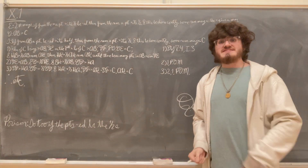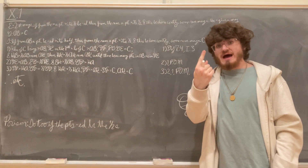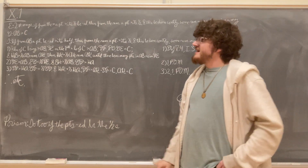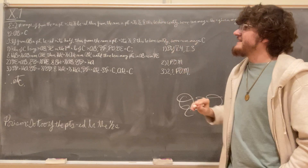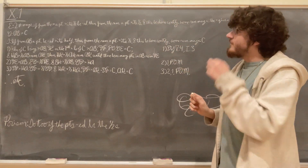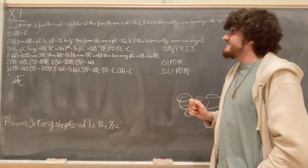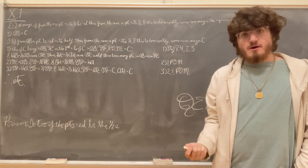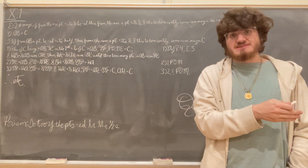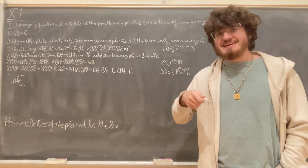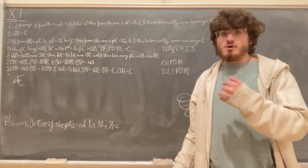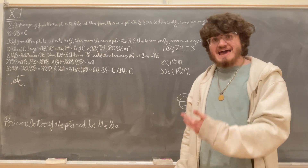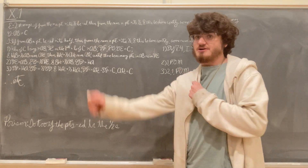Hello! This will be a demonstration of Proposition 1 from Book 10 of Euclid's Elements, which says that if there be two unequal magnitudes, and if from the greater a part greater than its half be subtracted, and then from the remainder a part greater than its half be subtracted, and this be done enough times, then we will eventually reach some remaining magnitude which is less than the given lesser magnitude.